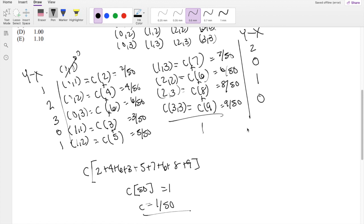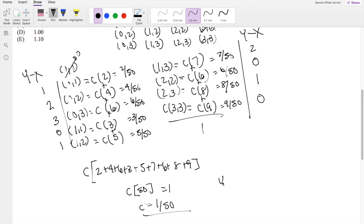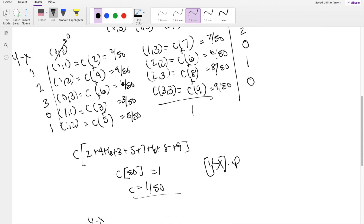So we know that expectation, as always, is the value we're looking for times its probability. So when we sum it up, the first one is going to be 1 times 2 over 50, which is just 2 over 50. The second one is 2 times 4 over 50. The third one is 3 times 6 over 50.